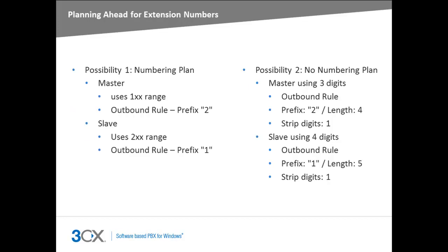When configuring bridged connections, it can help to plan ahead for the numbering scheme selected at each end of the bridge. If you employ a numbering plan, you could, for example, set the master system to use extension numbers in the range 100 to 199, and the slave system to use the range 200 to 299. This setup avoids the need for users to dial a prefix, and the PBX can route the call based on the first digit of the number. If you do not use a numbering plan, you would need an outbound rule on one PBX to match the numbering scheme on the other PBX, completing the prefix and length matching, as well as stripping of the leading prefix digit.